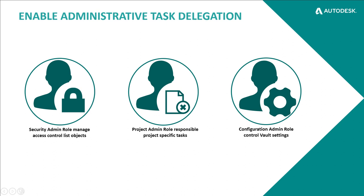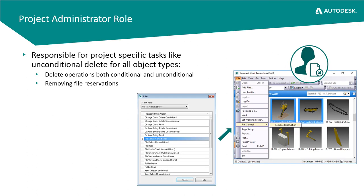We're going to talk about three roles. First off, the project administrator role. This particular user can now remove the reservation on a file — meaning a user has checked out a file, maybe they're not in for the day, but someone else wants to modify it, or maybe the user no longer works at your company but has files checked out. The project administrator can go in and remove the reservation, meaning they can do an undo checkout, even though they are not the person who originally checked out the file. This administrator also has the ability to do unconditional deletes, which was previously only available to the full administrator.